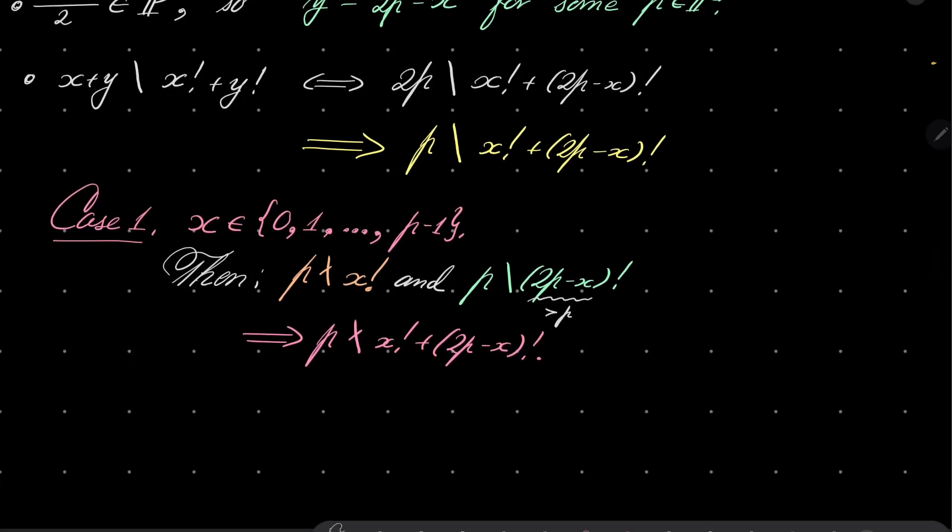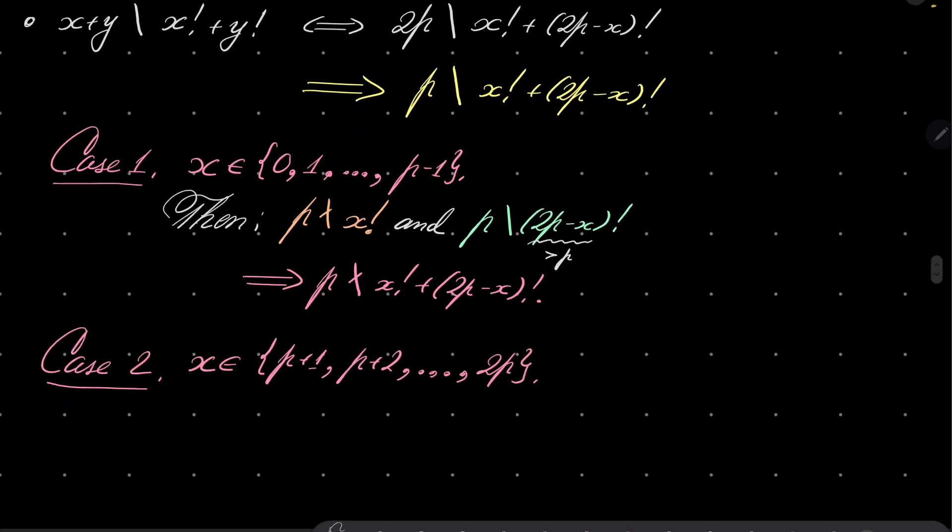Similarly, case number two, when x is p plus 1, p plus 2, up to 2p. But then we have a similar situation but the other way around. Now p divides x factorial and p does not divide 2p minus x factorial.